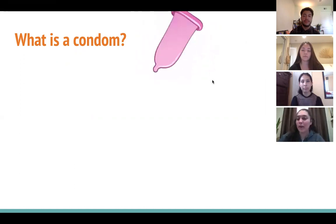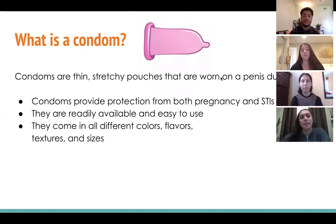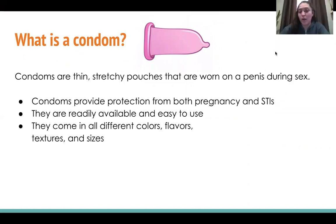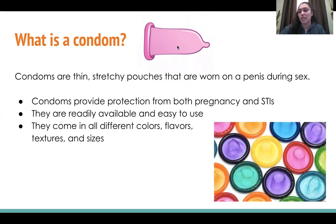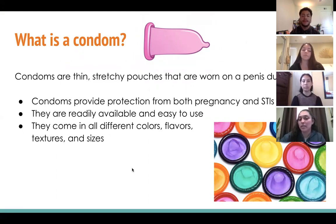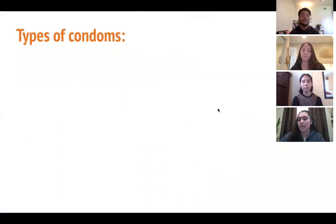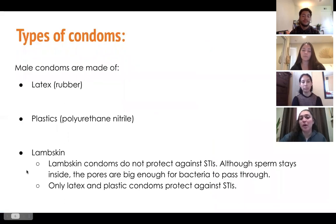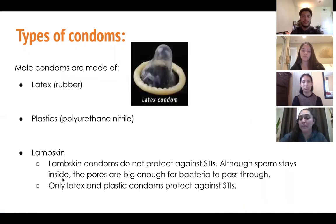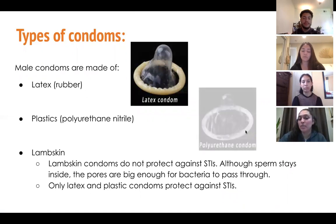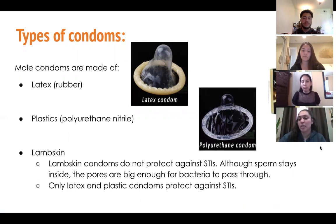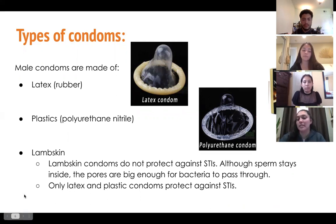Hello everyone, my name is Diana and I'm going to be talking about what a condom is. Condoms are thin, stretchy pouches worn on the penis during sex. They provide protection against pregnancy and STIs, are readily available and easy to use, and come in all different colors, flavors, textures, and sizes. Types include latex (rubber), plastic (polyurethane/nitrile), and lambskin. Lambskin condoms do not protect against STIs — only latex and plastic condoms do.